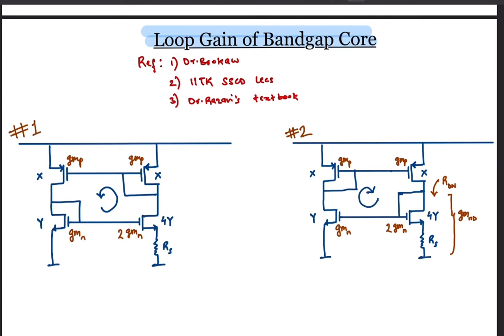Note that we are neglecting the GDS and body effect in this analysis. If we consider GDS, it will simply come in parallel with the load resistance, whereas body effect will change the VGS and GM of the degenerated NMOS.